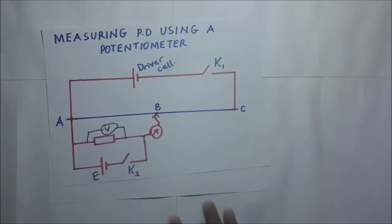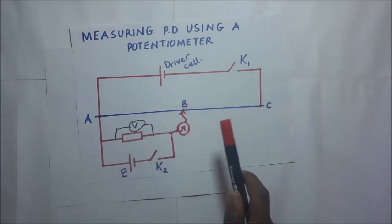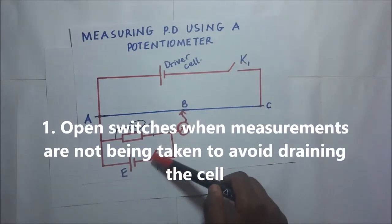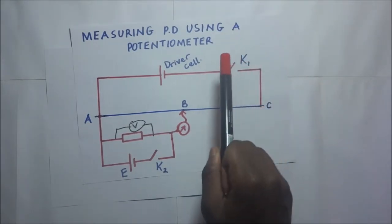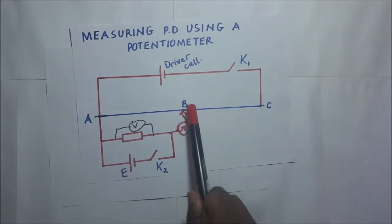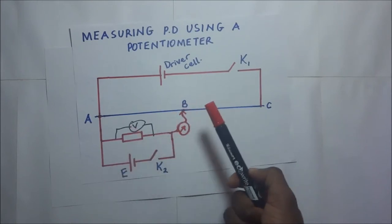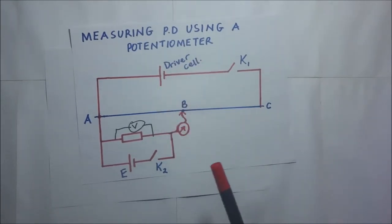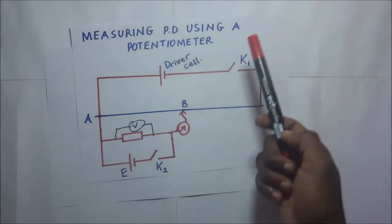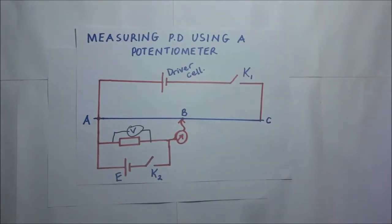When you connect your potentiometer circuit and you are not currently taking any readings, it is always advisable to leave your switches open. You should only close the switches when you are actually measuring something. Otherwise, leaving switches closed will drain the cell, and when they drain the cell, you won't be able to get accurate results in forthcoming measurements. Always open the switches when measurements are not being taken to avoid draining the cell.